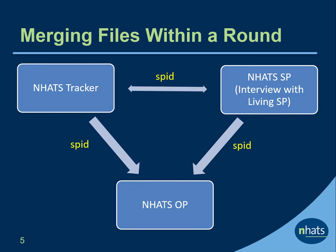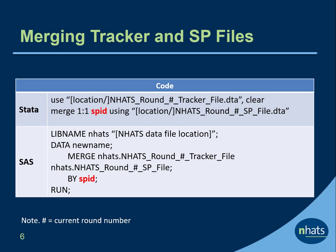Let's take a look at some examples. Here we show Stata and SAS code for merging an NHATS tracker file with an NHATS SP file from the same round. For both Stata and SAS, the merge variable SPID is shown in red. Because there is one tracker record for each SP file record, in Stata the user should specify a 1-to-1 merge.